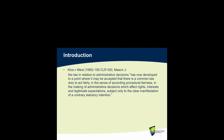However, in relation to executive decision makers, the statement of Mason J in Kiowa v West tells us that it is actually possible for Parliament to state that the rules of natural justice will not apply in a specific instance. The principle of natural justice can be overridden or displaced by a clear manifestation of Parliament's intention. However, this displacement is not something lightly taken — it requires a clear manifestation or a clear intention on the part of Parliament.